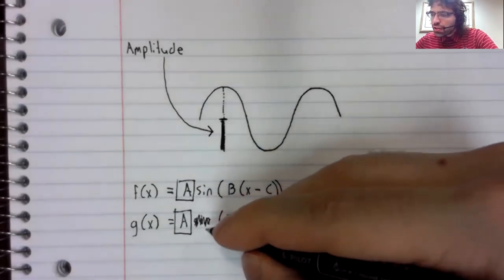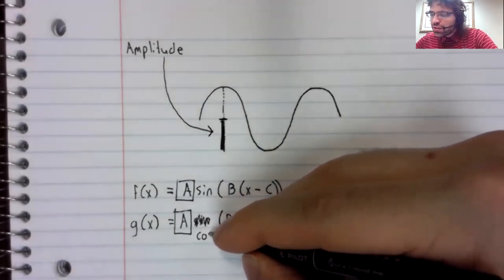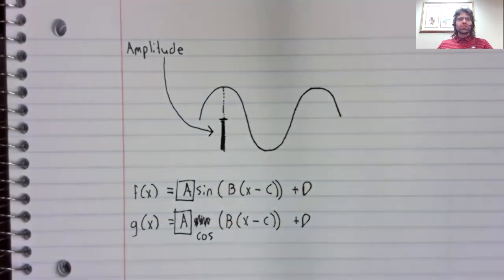Sorry, I didn't mean to write the same thing twice. It's the constant A that controls the amplitude.